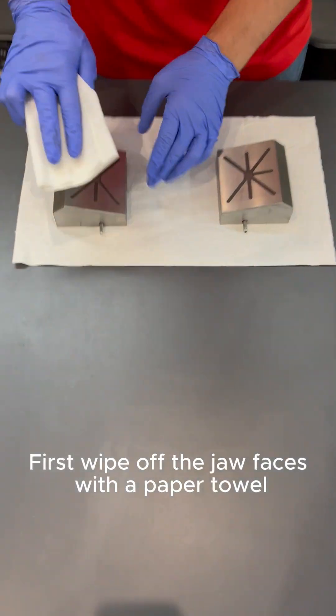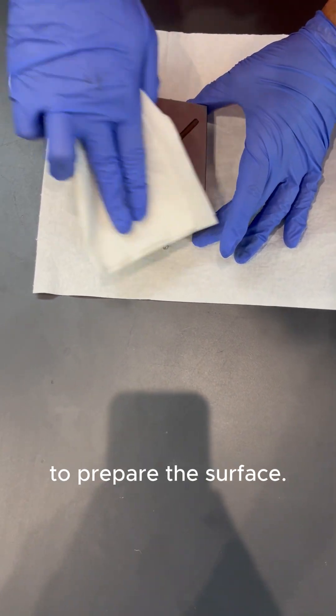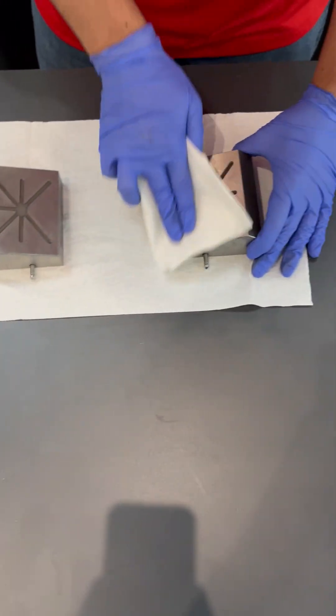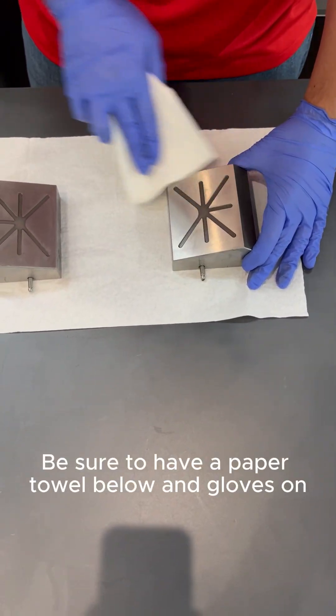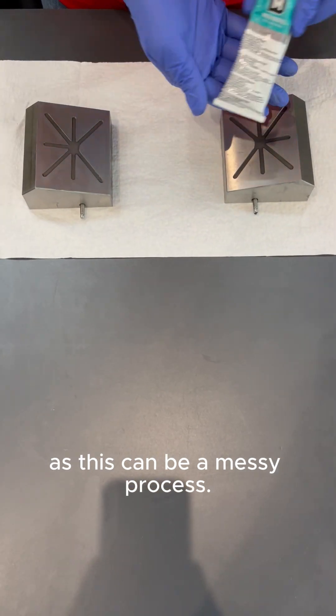First, wipe off the jaw faces with a paper towel to prepare the surface. Be sure to have a paper towel below and gloves on, as this can be a messy process.